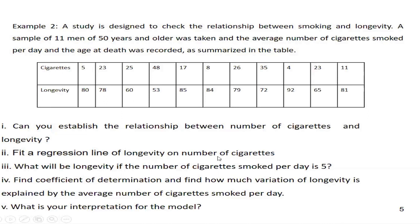Then we have to make a prediction: if we fit the regression line, what will be the longevity of someone who smokes five cigarettes per day? Here five cigarettes is given — the actual value is 80 years — but what will the prediction be? We can do the prediction for 10 cigarettes, 20 cigarettes, or any value. Here I take five cigarettes to find the estimated value and compare it to the original value.